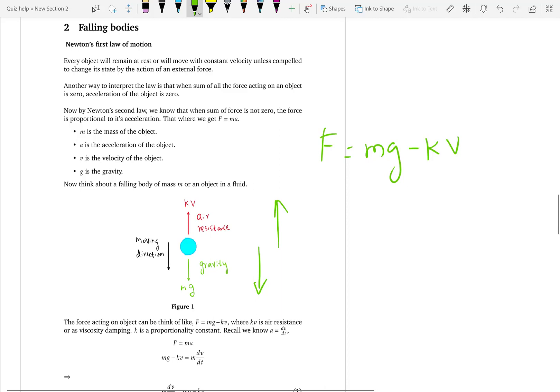The forces are Mg minus Kv. Now we know from the second law, force is proportional to acceleration, which is M times A. Acceleration is the rate of change of speed. So M dV over dt is Mg minus Kv. V is the speed.